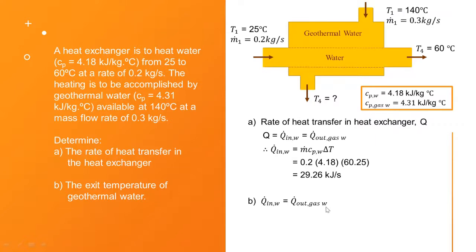The second question is to determine the exit temperature of geothermal water. Here we say that the heat gained by the water is equal to the heat lost by the geothermal water. So heat lost by the geothermal water is equal to 29.26, which equals m·Cp·ΔT, where m is 0.3, Cp is 4.31, and ΔT is 140 minus T4. We got T4 equal to 117.4 degrees Celsius.